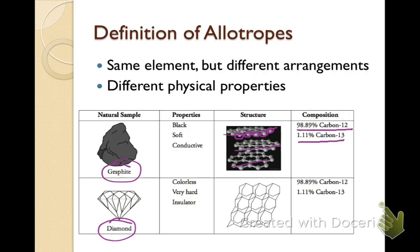In diamonds, they're going to be colorless, extremely hard, and they're also good insulators. Instead of being in sheets, they're actually in networks — every little point you see would be a carbon atom. All the carbon atoms are attached to another carbon atom. If we look at the composition, it's also made of 98.89% carbon-12 and 1.11% carbon-13. You don't need to memorize those, but I just wanted you to see that the composition is the same between graphite and diamonds, but because they're arranged differently, their properties are completely different.